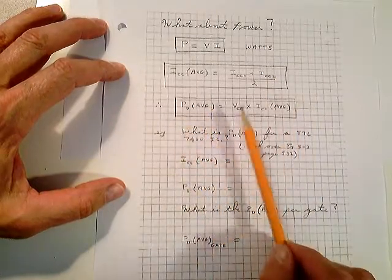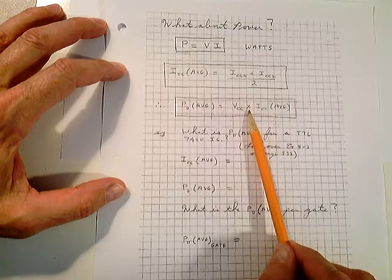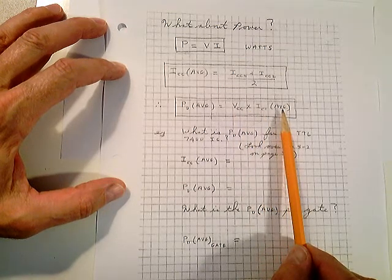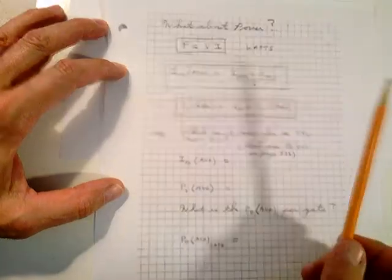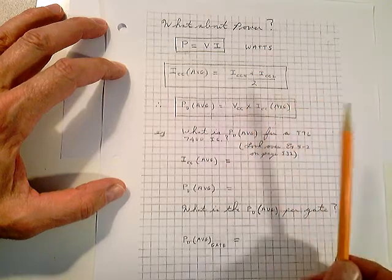The average power dissipated then is VCC times that average current. So these equations are very useful in all the integrated circuit package specifications. The numbers change, that's all.